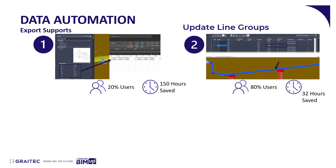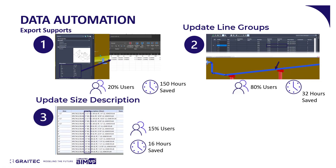The ability to update line groups — on a project with a thousand lines, even spending only two minutes per line entering nominal information, that's 32 hours just entering the data once. By automating that process we save that time. Similarly, for updating the size description, for a catalog with 500 parts and 6,000 sizes, even an advanced Plant 3D user would spend about 16 hours typing — and we can fully automate that.